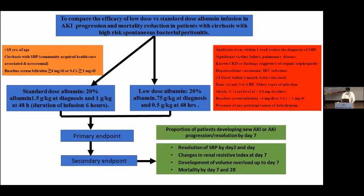The inclusion criteria are patients over 18 years of age with cirrhosis and SBP, with baseline serum albumin, bilirubin of more than 4, and creatinine of more than 1. Exclusion criteria include patients who have taken antibiotics within one week before SBP diagnosis, significant cardiac failure, pulmonary disease, known CKD, underlying TB or HIV infection, GI bleed, paralytic ileus, grade 3 or 4 hepatic encephalopathy, serum creatinine more than 4, and baseline serum bilirubin less than 4 and creatinine less than 1.